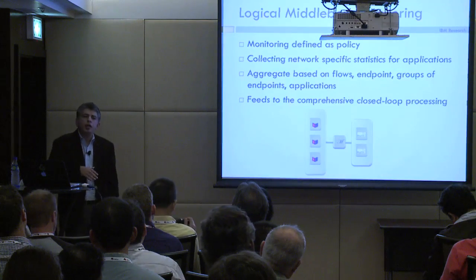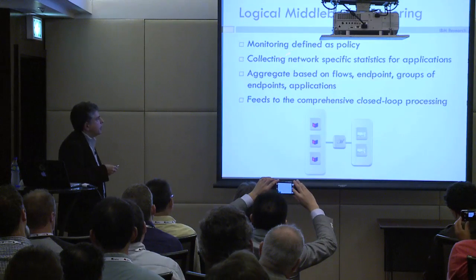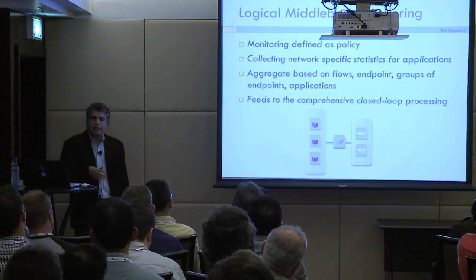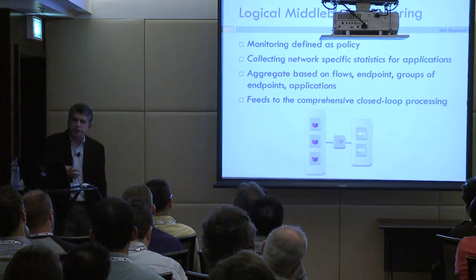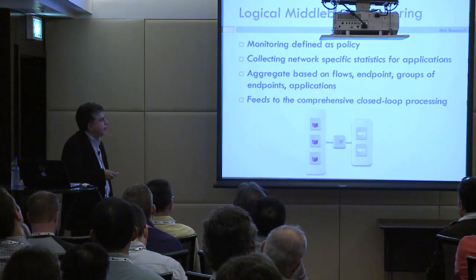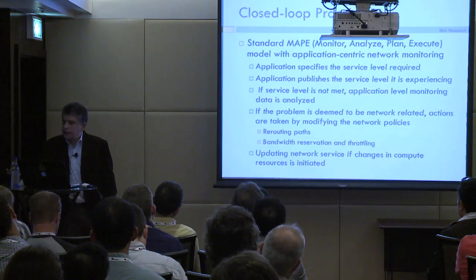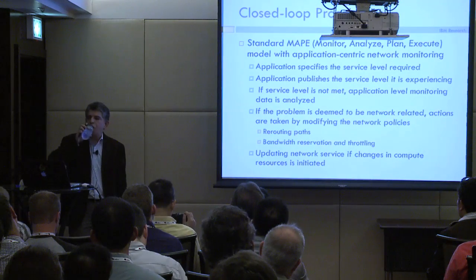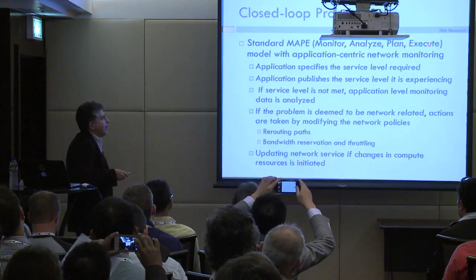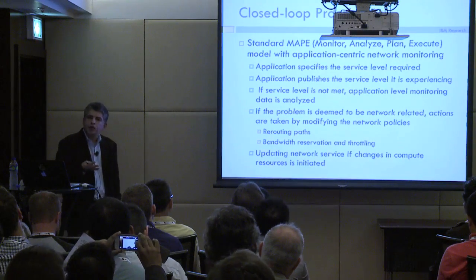You can have logical middle boxes when you specify, for example, monitoring as a policy between two tiers. That could be used for collecting statistics on networking resources, aggregating them at the policy and application level. This could lead to a more comprehensive closed-loop kind of processing, where the standard monitor, analyze, plan, and execute cycle could use networking resources more easily.